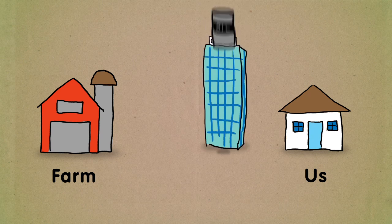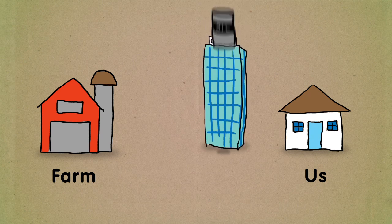But over time, corporations found it was more profitable if they produced food on an industrial scale.